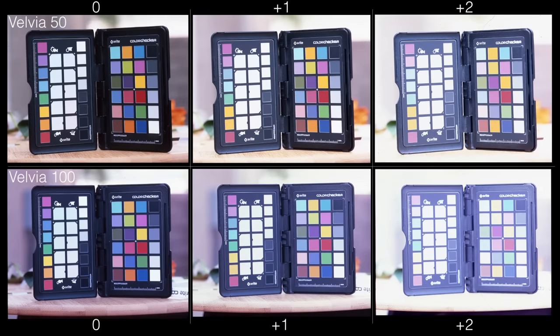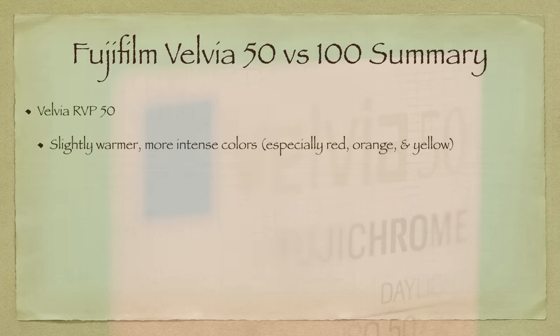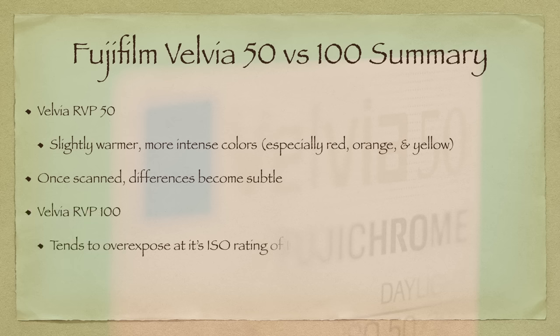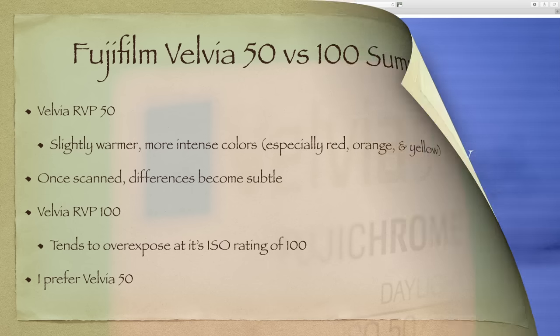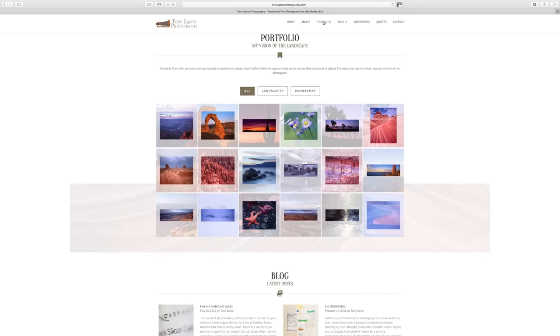Here is another slide showing these differences with normal and overexposure. To summarize: on a light table, the differences between these two films are that colors such as red, orange, and yellow tend to be slightly deeper and more intense with Velvia 50. However, once the images are scanned on a flatbed scanner, the bulk of that difference is ameliorated. Velvia 100 also tends to slightly overexpose at its ISO rating of 100. Personally, I prefer Velvia 50 because I have been using it since I started shooting Velvia and feel the most comfortable with it, especially with reciprocity considerations. Interestingly enough, my portfolio on my webpage shows images using both types of Velvia — can you spot the difference?